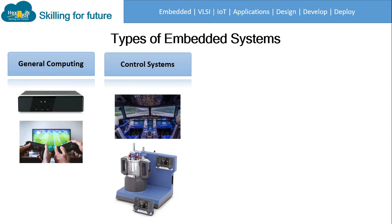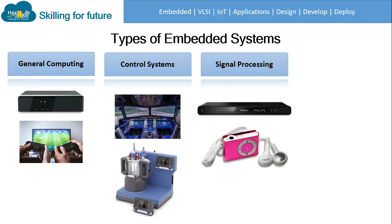The second type is control systems — systems whose objective is to control connected equipment or devices, such as flight control or reactor control. The third type is signal processing — systems in which an input signal is processed and converted to an output signal understandable by humans, such as a DVD player or MP3 player, where the input signal differs from the output signal.